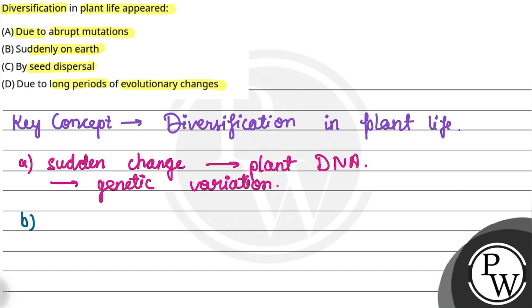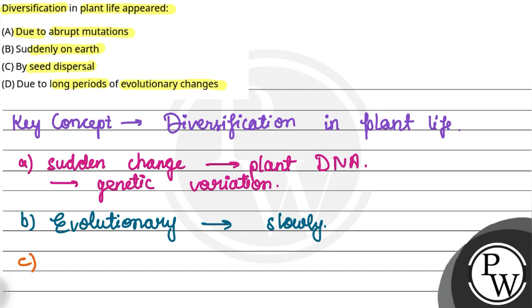Option B है — suddenly on earth. Scientists के evidence यह support करते हैं कि plant का diversification धीरे-धीरे, millions of years में हुआ है। यह एक evolutionary process है, rather than suddenly। यह suddenly नहीं हुआ था, इसलिए Option B wrong है।